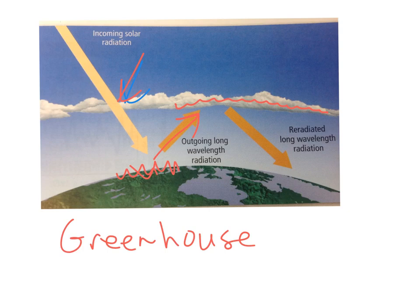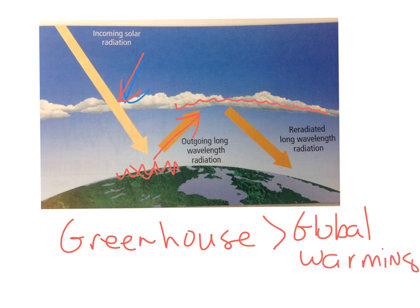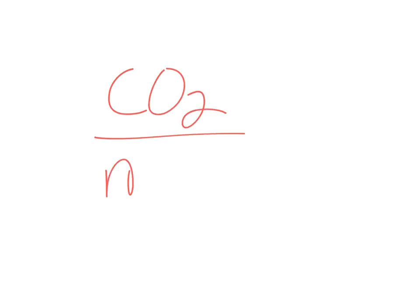The greenhouse effect may lead to extensive global warming, and this effect can build upon itself. The gases most effective in causing the greenhouse effect are CO2 and methane. We want to examine some of the sources of those gases.